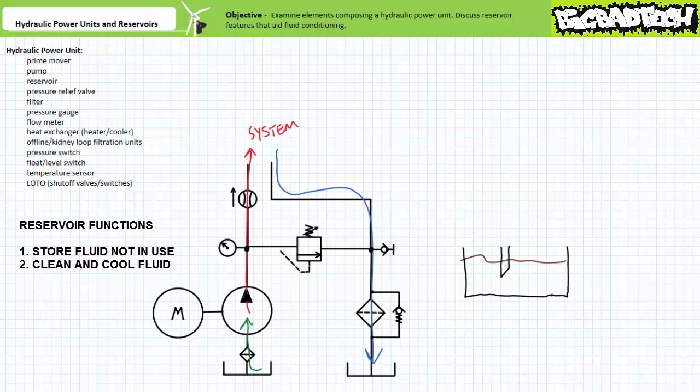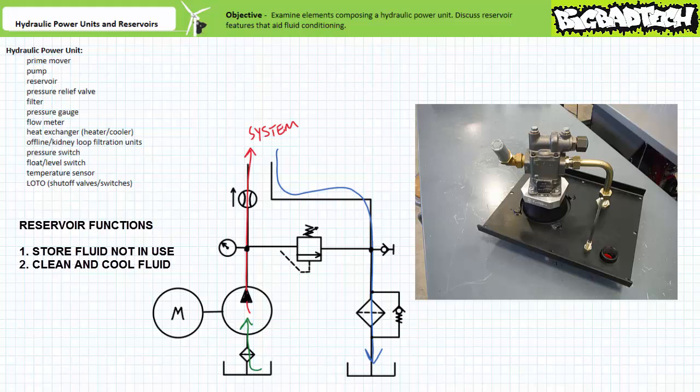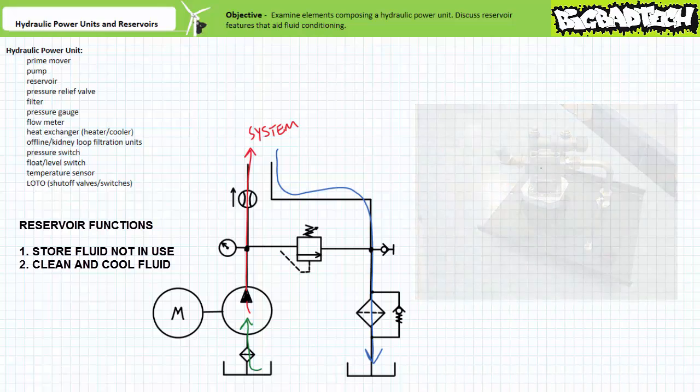Suction lines, by the way, must be designed to withstand vacuum conditions and not collapse inwards. For this reason, suction lines often include rigid internal reinforcements that allow them to remain open. Here's an example of a partially disassembled hydraulic power unit with a suction filter in the pump's suction line.